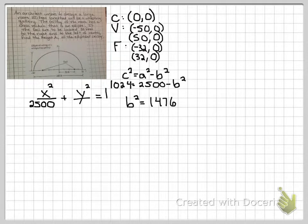So solving for b squared, I get 1476, which is the number that goes under y squared. That's how many up and down from the center you would go, the square root of that.